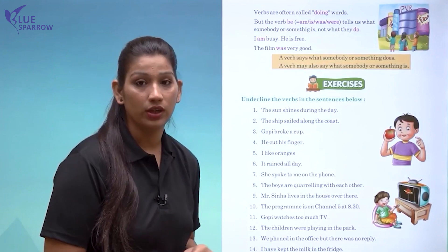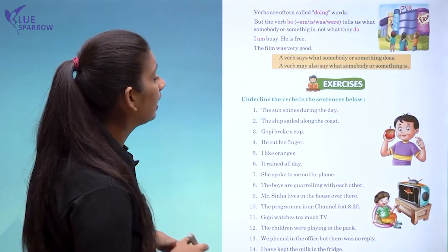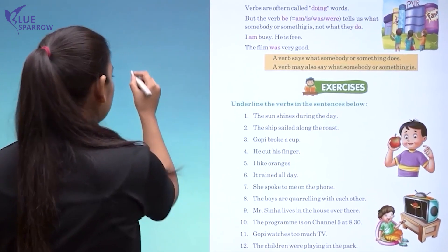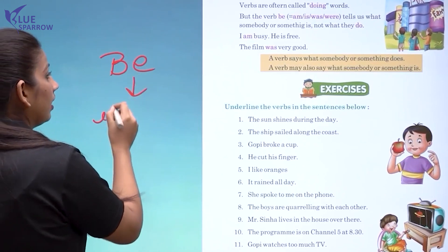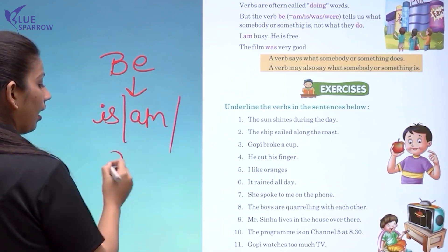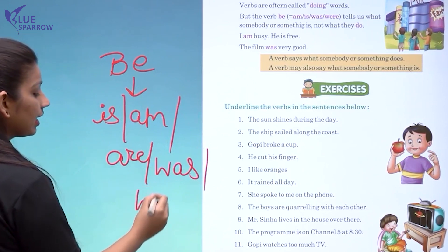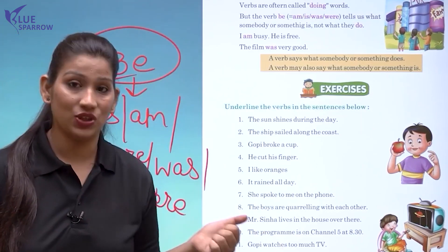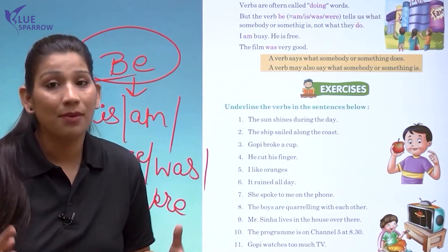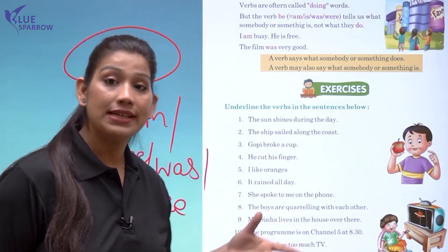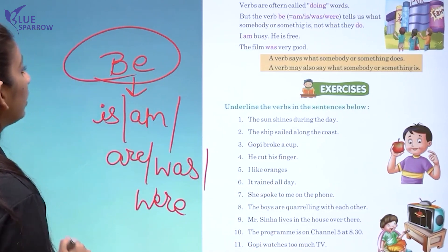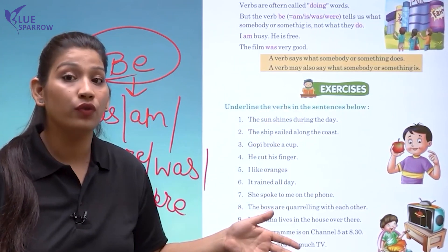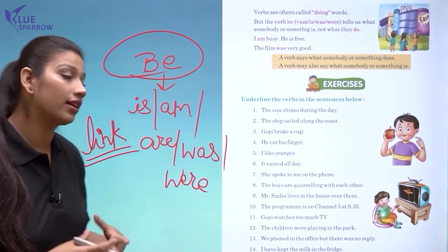Verbs are often called doing words. But the verb 'be' tells us what somebody or something is, not what they do. Be-form verbs include: is, am, are, was, were. These be-form verbs do not tell us the action — they do not tell what somebody does. Instead, they tell us about the person or subject, linking the sentence to describe what somebody or something is. For example, 'he was faithful' — it tells us what he was like.